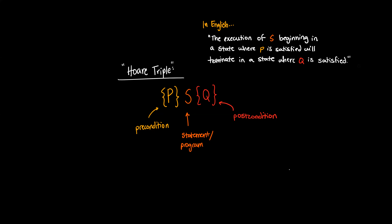The expression on my screen here is commonly referred to as a Hoare triple, and basically it consists of a precondition often denoted as P, a statement or a program often denoted as S, and a postcondition often denoted as Q. You'll always see it with these curly braces around the pre and postcondition.